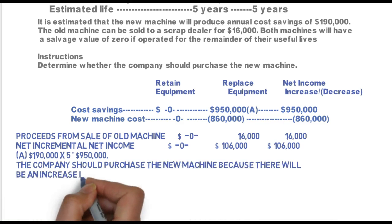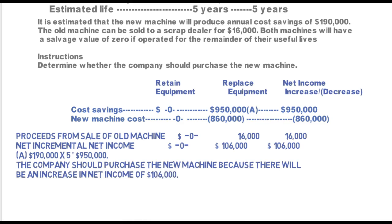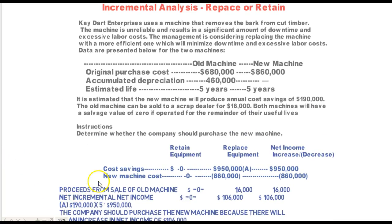The company should purchase the new machine because there will be an increase in net income of $160,000. The replace figure was $190,000 a year times five years — that's the incremental savings if I replace the equipment. So this one is basically a no-brainer: you would replace the equipment.